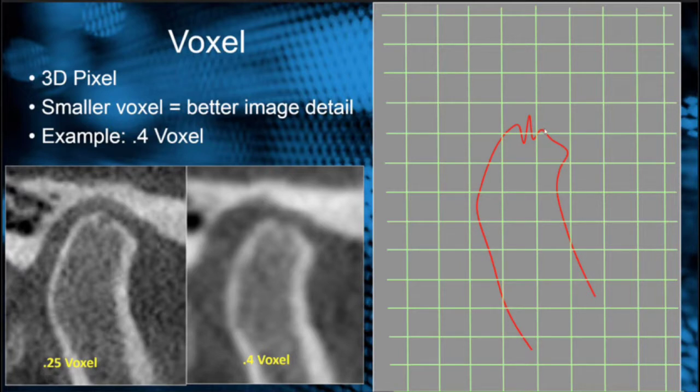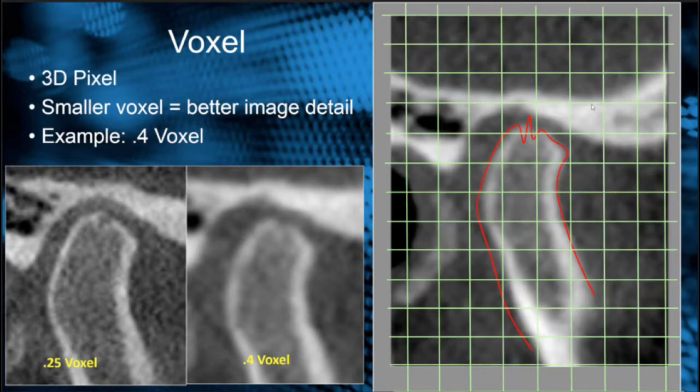In this example, a 0.4 voxel, we may have just a very little amount of information in this window and the computer has to say, is there some data in this window or not? It may end up not choosing it. If we superimpose over the x-ray, we can see where the 0.4 voxel is not giving us all the detail that's actually in the actual patient.